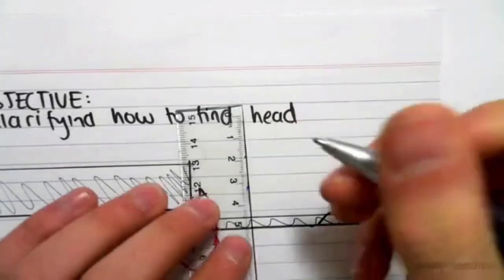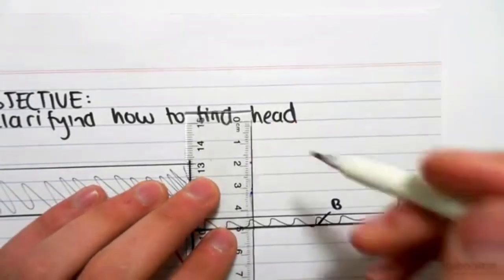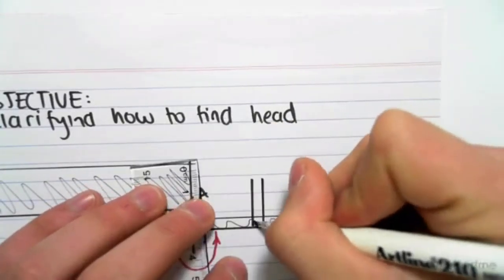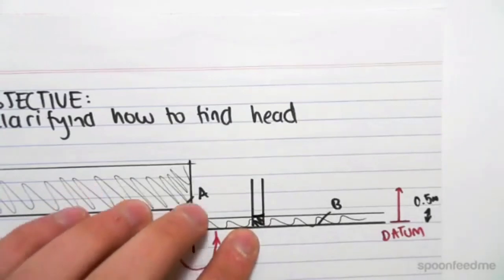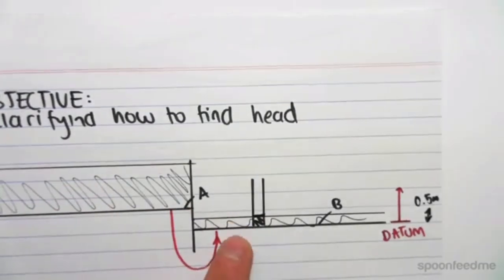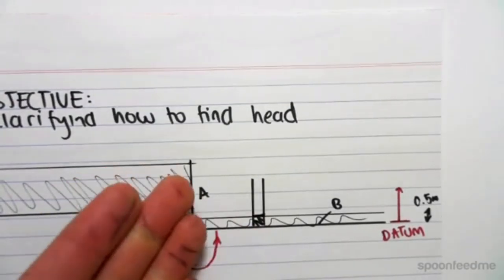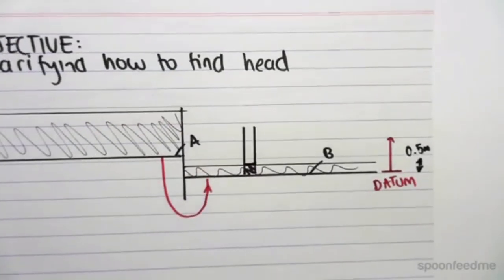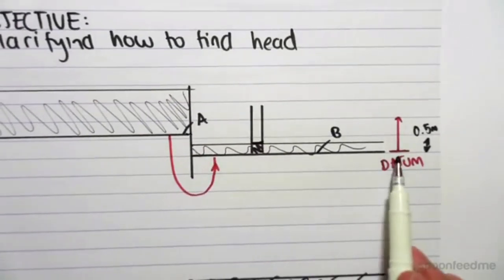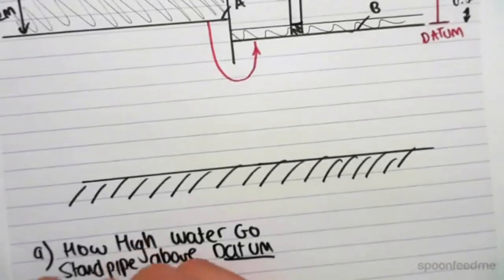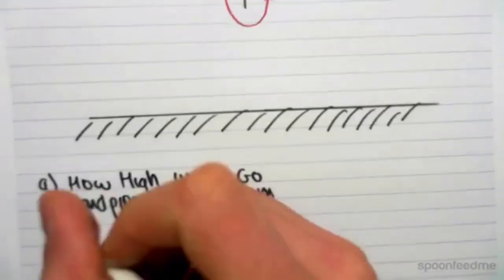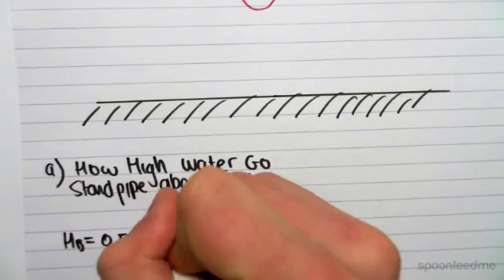So if we were to stick a standpipe at this point, the water would rise up to a point 0.5 meters. Because there's no pressure anywhere forcing this water up higher. So the height the water would go above the datum would be 0.5 meters. So that's the head at B would be 0.5 meters.